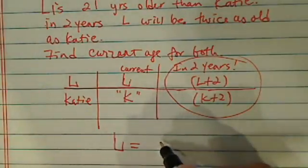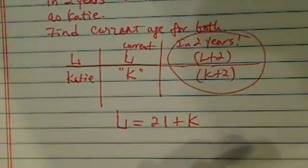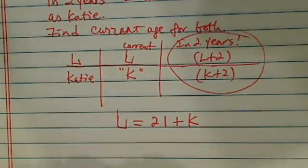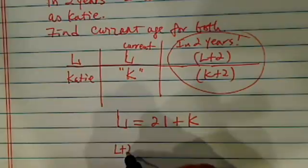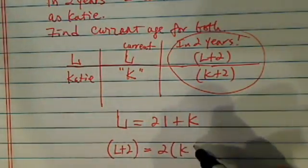So L from the first sentence is 21 years older than Kitty. That's a bit easy equation. Second one, it says in two years, L is no longer L. It's L plus 2 will be twice of Kitty plus 2.